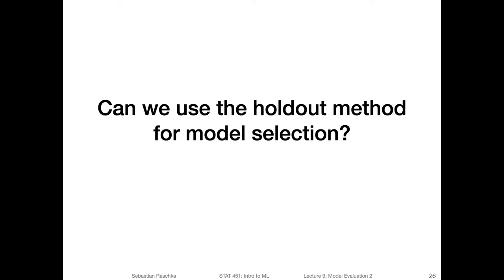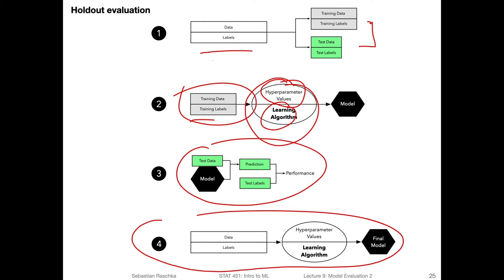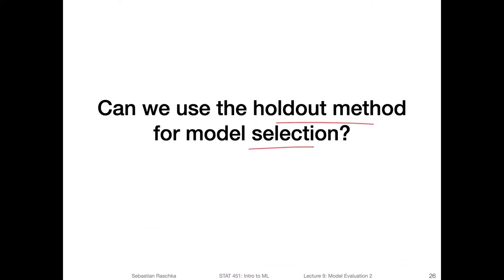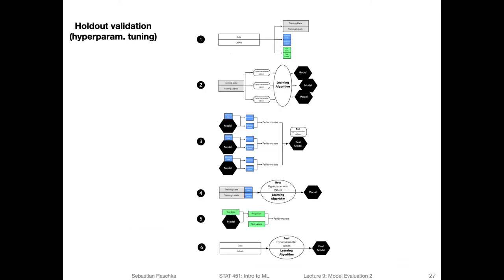Now we are trying to use the holdout method for model selection. We are considering different hyperparameter options here, and then use the validation set for hyperparameter tuning. Here is the overview of the holdout method for model selection.